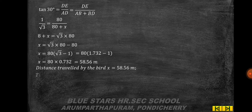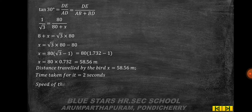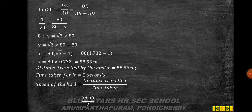Distance traveled by the bird x = 58.56 meters. Time taken = 2 seconds. Therefore speed of the bird = distance/time = 58.56/2 = 29.28 meters per second.